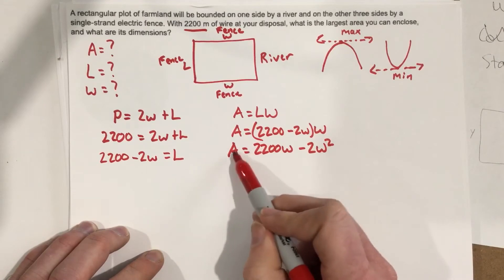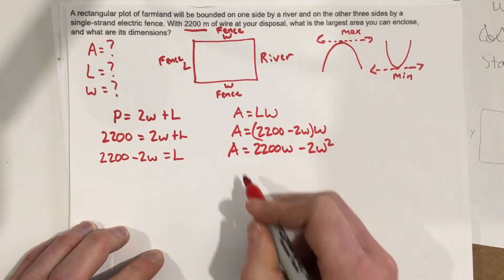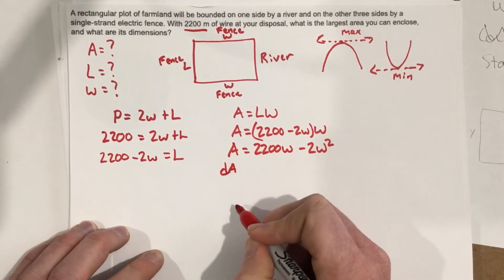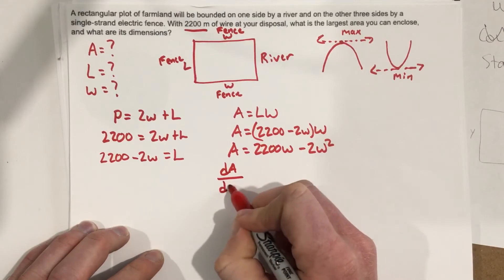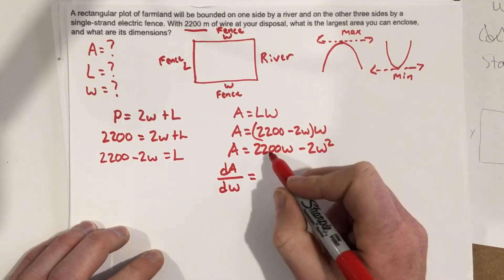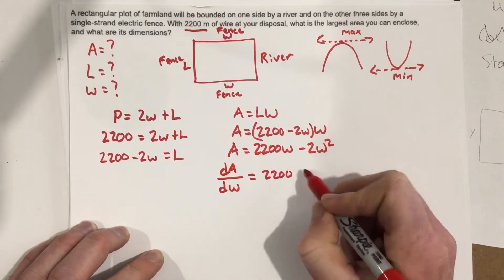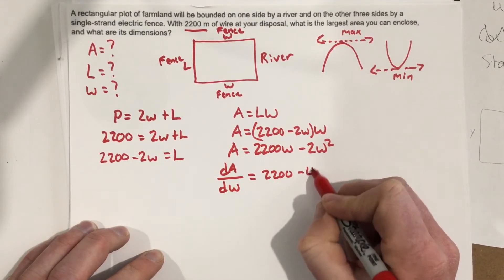We're going to take the derivative of this function, we're taking the derivative with respect to W. So, when we take the derivative, we get the derivative of the area with respect to W is equal to 2200, bring the 2 to the front, minus 4W.